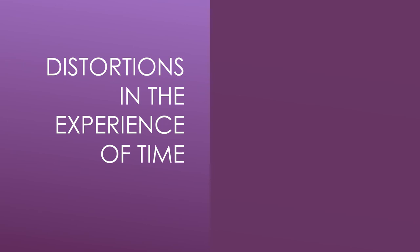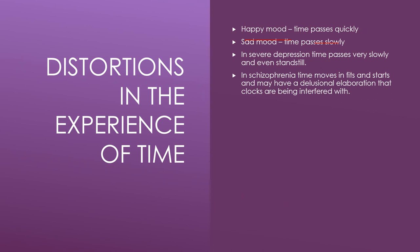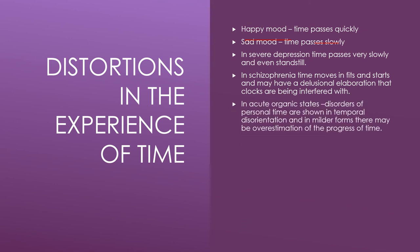What about distortions in the experience of time? In a happy mood, time passes quickly; in a sad mood, slowly. In severe depression, time passes very slowly or even seems to stand still. In schizophrenia, time moves in fits and starts — stopping and going — and may have a delusional elaboration where the person believes clocks are being interfered with, thinking somebody is actually manipulating their clock to confuse them.